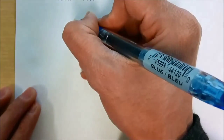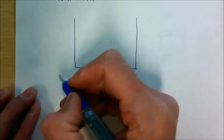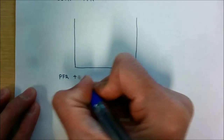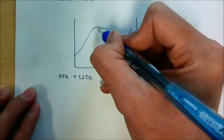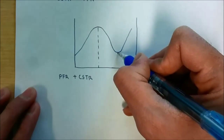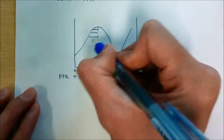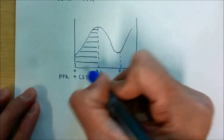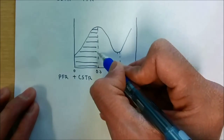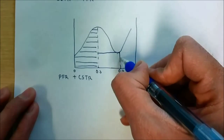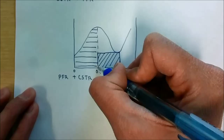In the second configuration, if we use PFR followed by CSTR, we first calculate the area under the curve for the PFR portion. Then, for the CSTR covering the second reactor from 0.3 to 0.7, we calculate the area of the rectangle in that region.